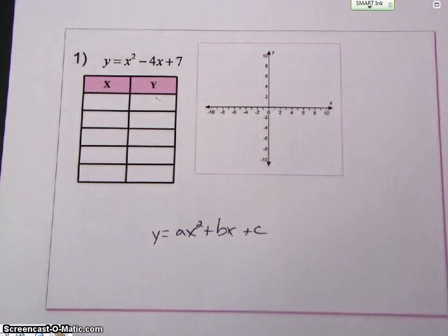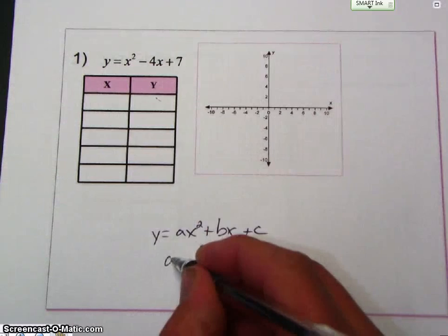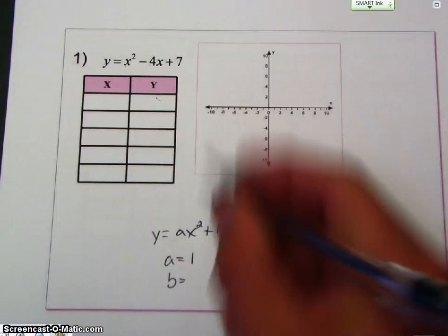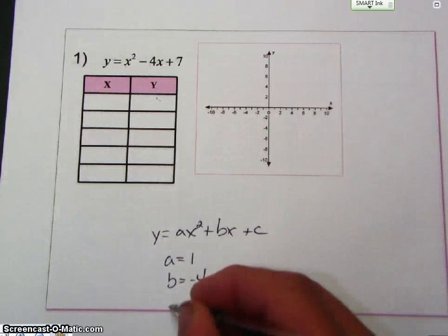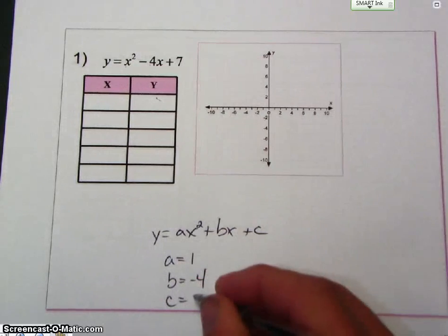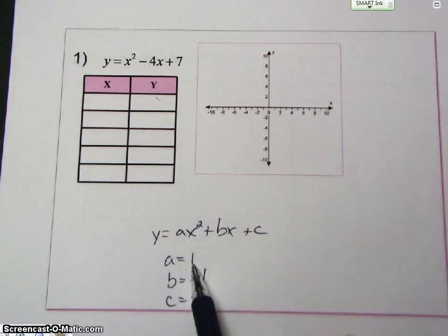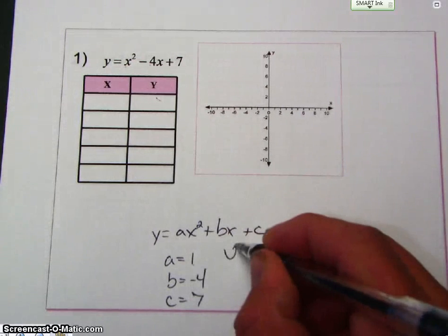So first of all, A is what? 1, B is negative 4, and C is 7. That's the first thing you want to do to find A, B, and C. Now A is positive, so that means it's going to open up.